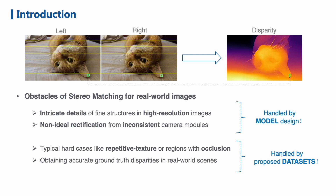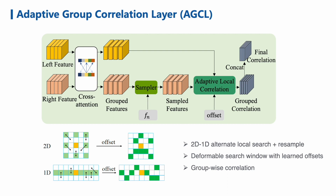We propose a novel model structure to extract fine details and overcome non-ideal rectification, and we design a new synthetic stereo dataset to boost performance for various hard cases. Unlike existing algorithms, we only match points in small local windows instead of computing global correlation for every pixel. Specifically, we propose an adaptive group correlation layer, AGCL, to reduce matching ambiguity. To deal with non-ideal stereo rectification cases, we adopt a 2D and 1D alternate local search strategy. With learned additional offsets, we use an adaptive search window for correlation pairs generation similar to deformable convolution. In addition, we split the feature map into groups to compute group-wise correlation.